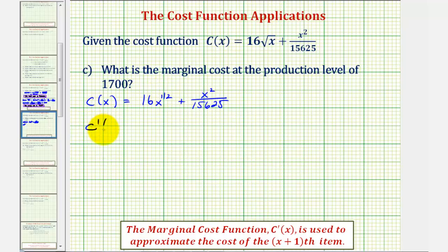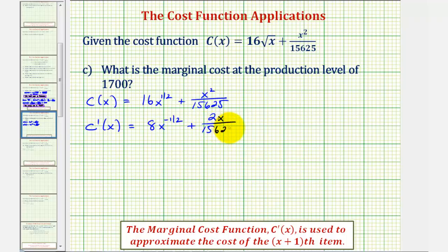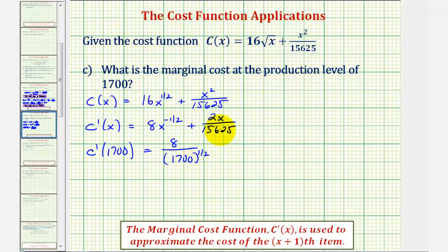So the marginal cost function, or c prime of x, would be equal to: multiply 16 by 1/2 to get 8, subtract one from the exponent giving x to the power of negative 1/2. The derivative of x squared is 2x, so we have plus 2x divided by 15,625. Now we evaluate the derivative at x equals 1,700: 8 divided by 1,700 to the positive 1/2 power, plus 2 times 1,700 divided by 15,625.